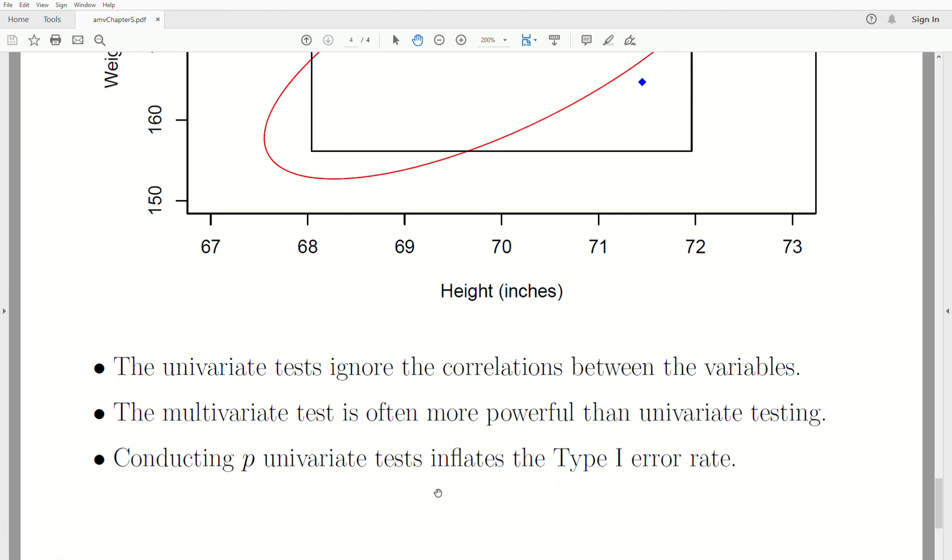So the multivariate test is often more powerful than the univariate test. And a big note is that when you're conducting lots of univariate tests, it inflates the type one error. Now the type one error is you reject the null hypothesis when you shouldn't.